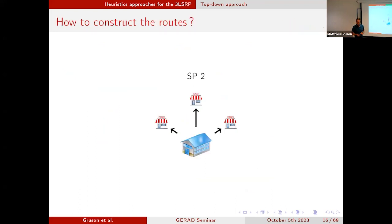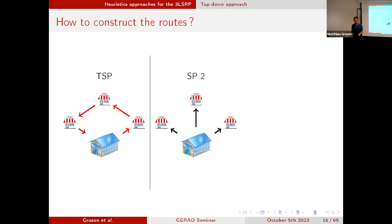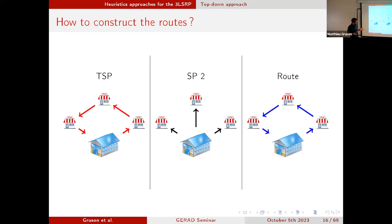Imagine you have this solution: you have a warehouse and you visit the different retailers. You know the positions of the retailers and the warehouse, so you can solve a traveling salesman problem and then build routes based on this solution. This is how we build the routes.